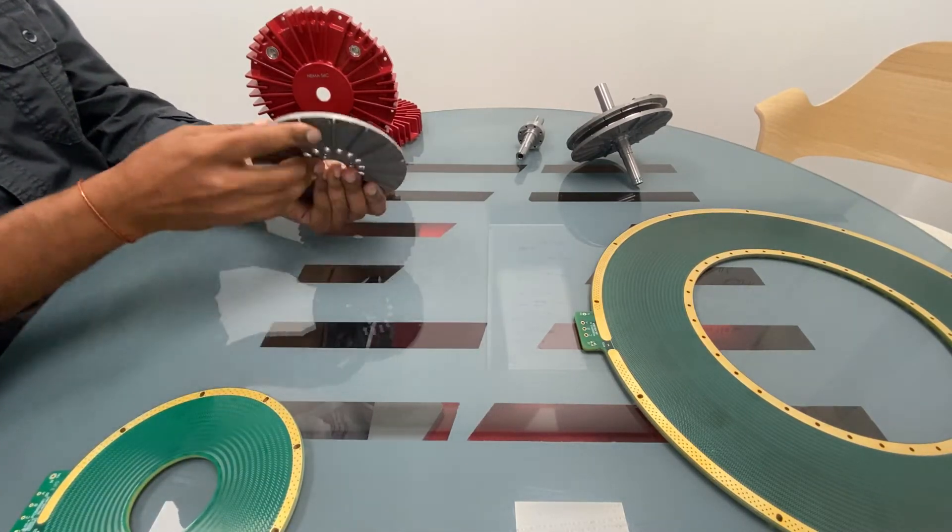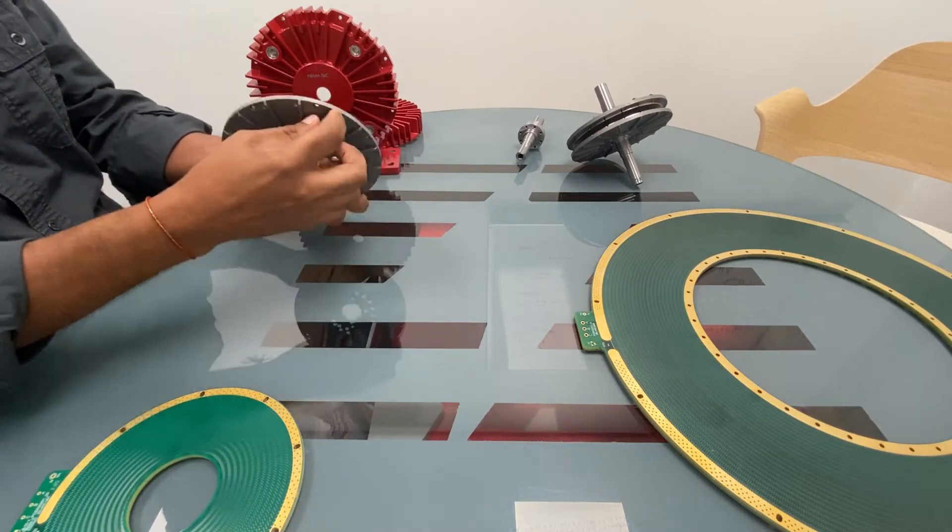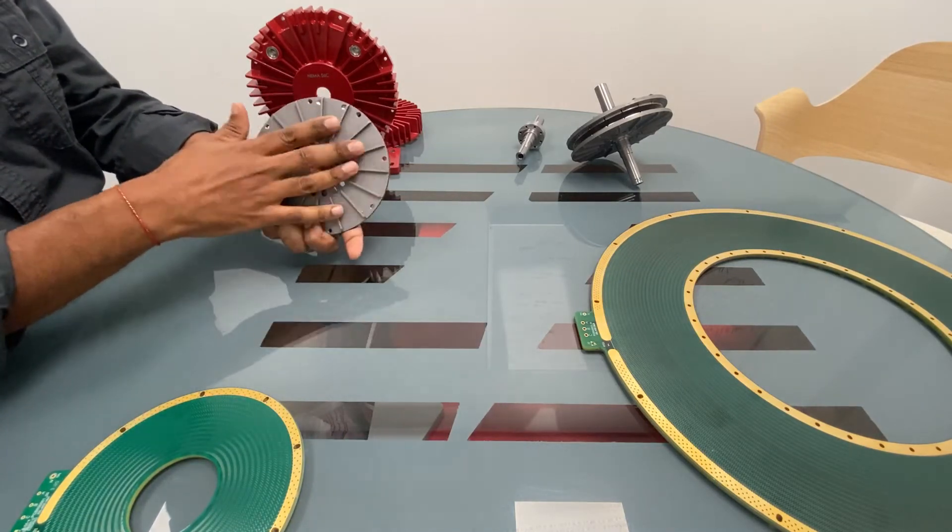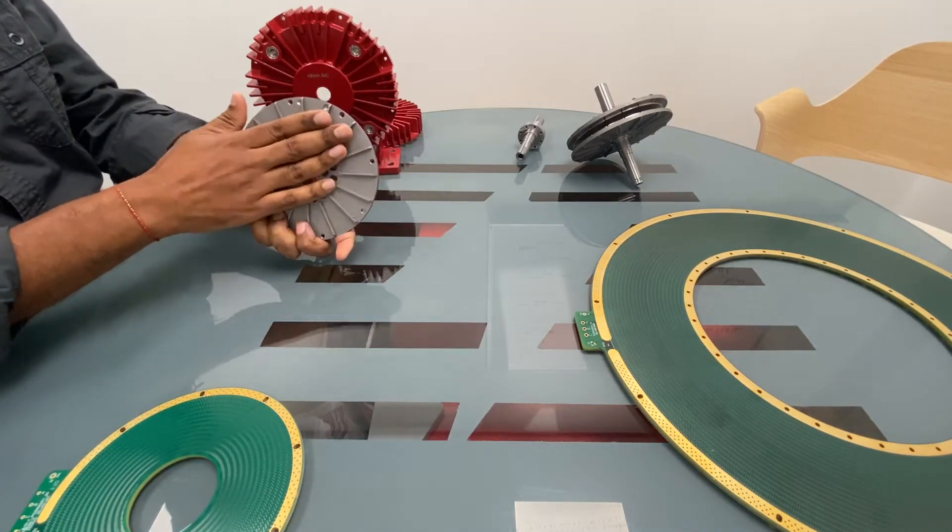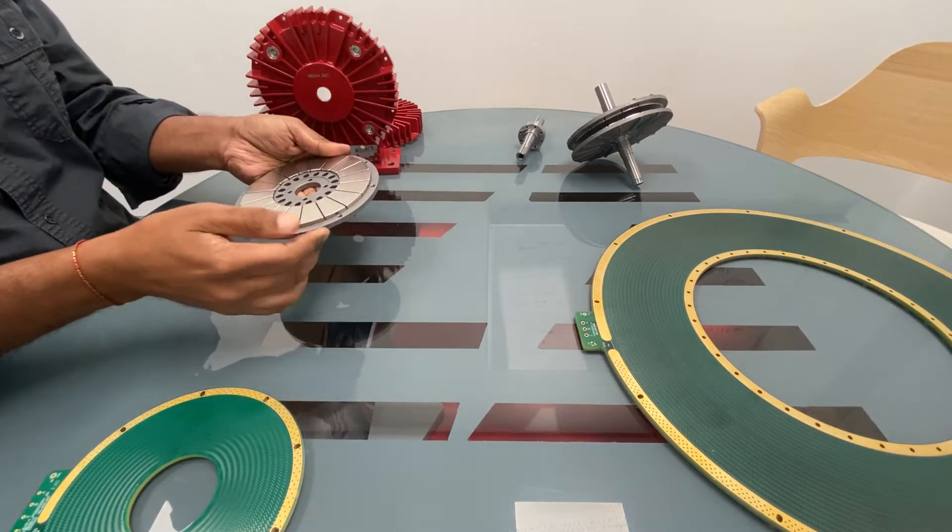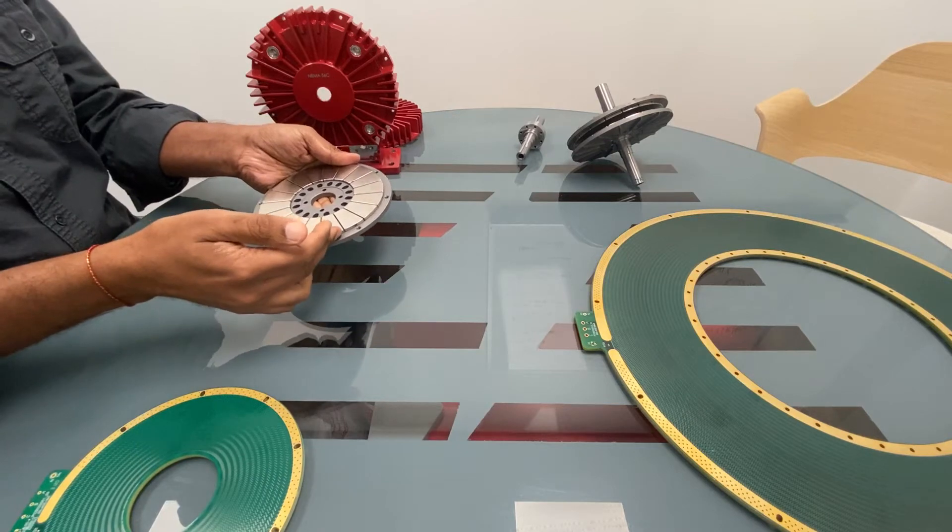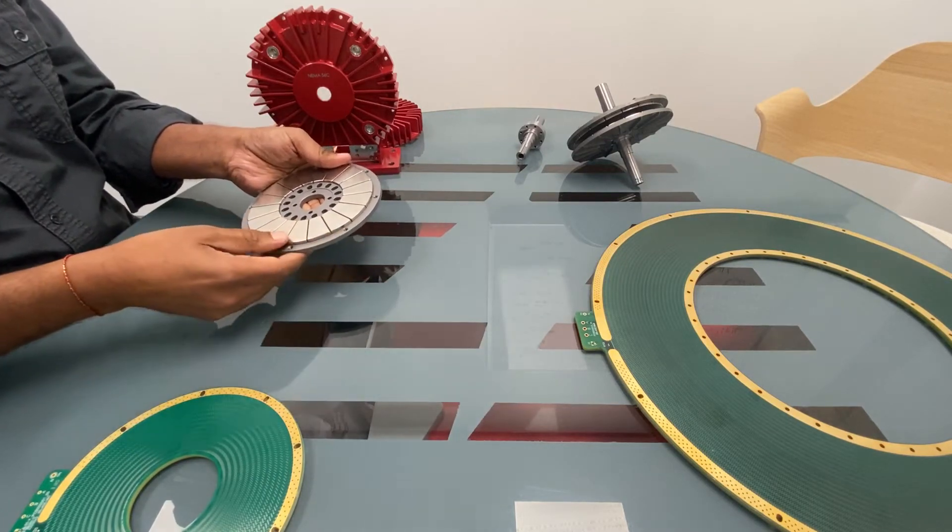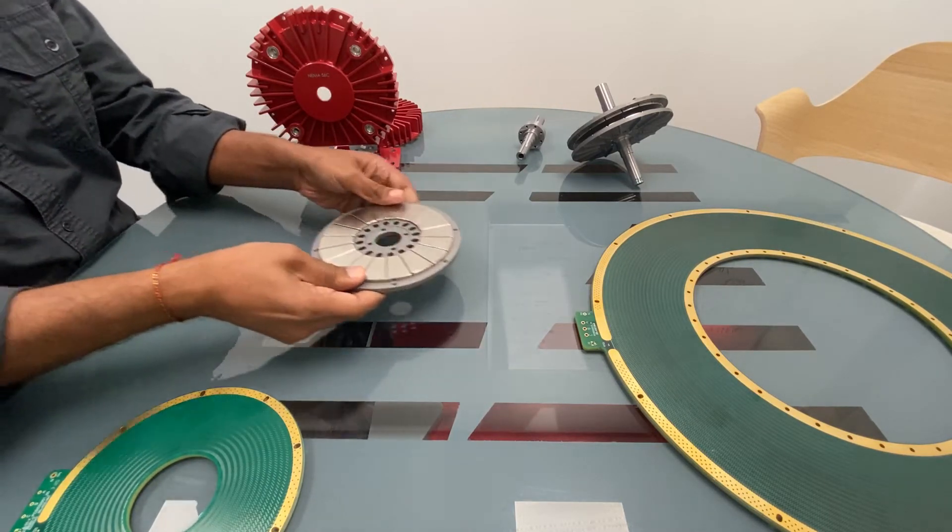The rotor is a very simple construction. This is a continuous piece of steel or iron, then we place the magnets on top. The magnets today are placed with an automated machine that's fairly simple in its design as well.